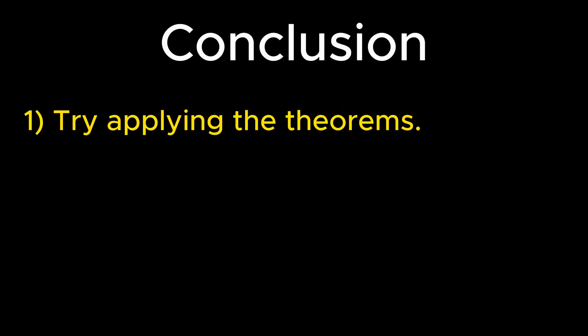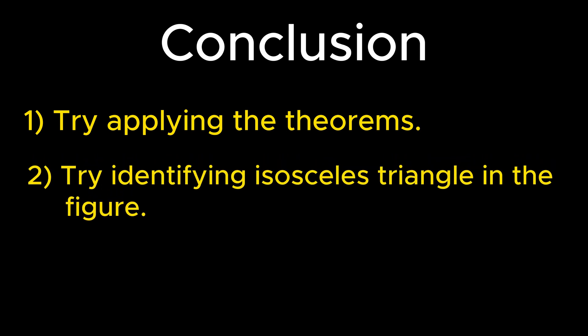By solving such problems in detail, we get the idea that if direct application of the theorems related to the circle and cyclic quadrilateral fails, then one must try to observe the figure in terms of isosceles triangles. As in a circle, a triangle formed using the center point will always tend to form an isosceles triangle. So this was it for the video. See you in the next one. Till then keep practicing and thank you for watching.